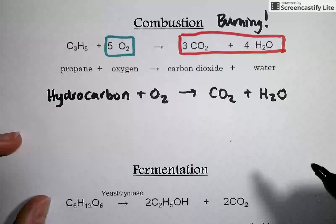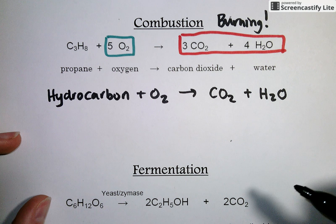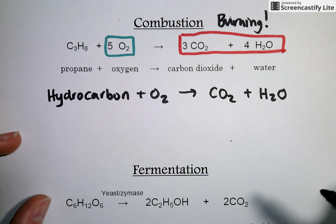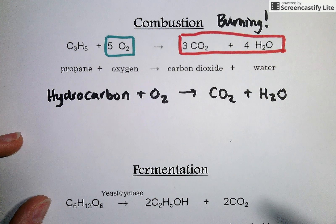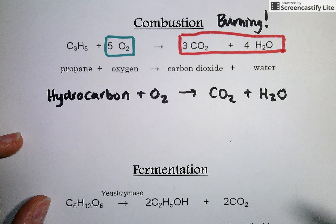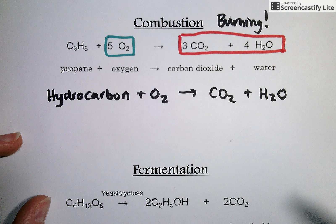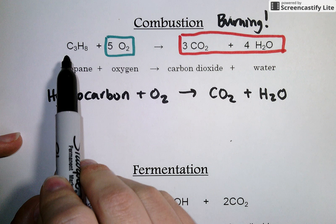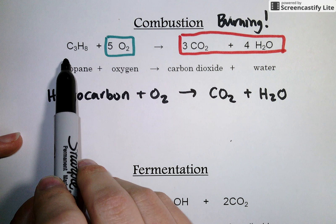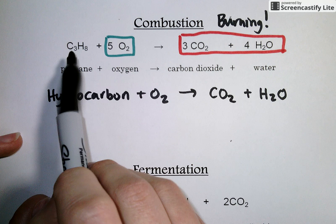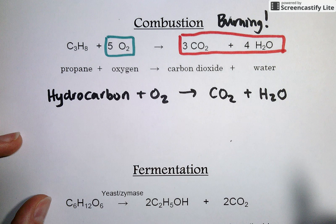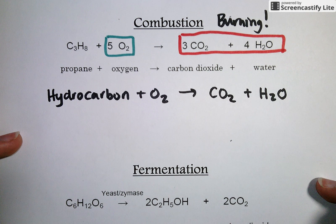Combustion reactions can be kind of tricky to balance. Sometimes you can check table I, where there's a collection of balanced combustion reactions. Otherwise, look first to your carbons, then to your hydrogens, and lastly to your oxygens when trying to balance those reactions.